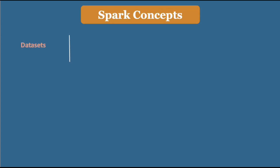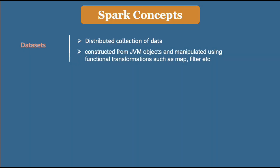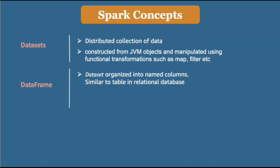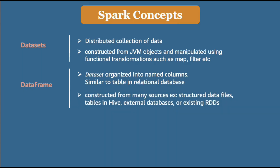Let us look at some more concepts. A Dataset is a distributed collection of data across worker nodes. Datasets are typically constructed from JVM objects and manipulated using functional transformations such as map and filter. The next concept is DataFrame — a Dataset organized into named columns, similar to a table in a relational database. A DataFrame can be constructed from many different sources: structured data files, tables in Hive, external databases, or existing RDDs.